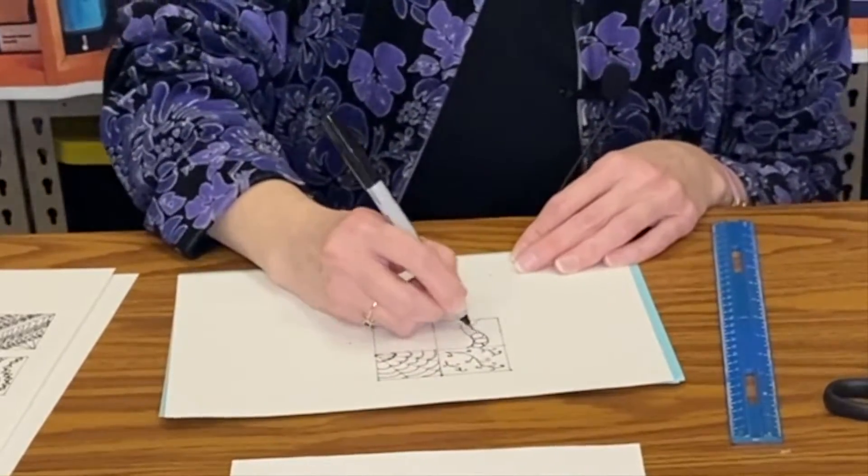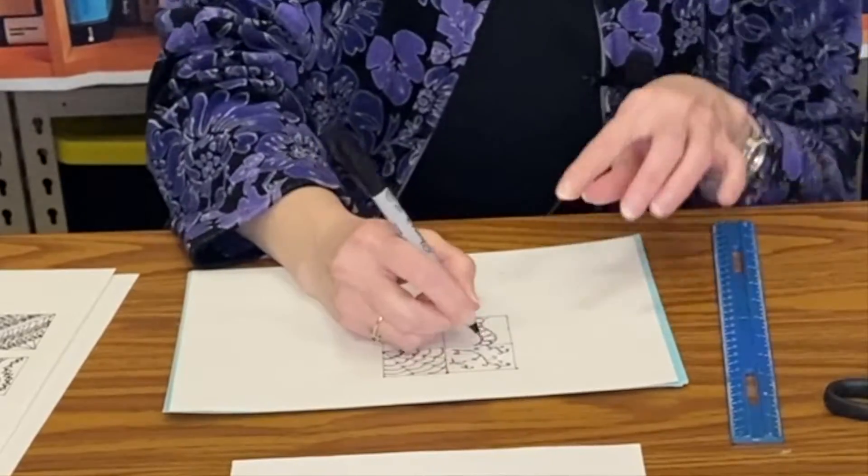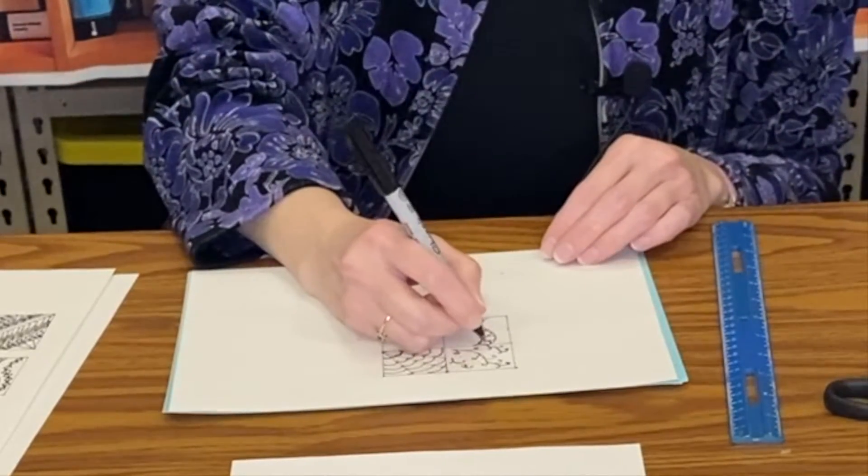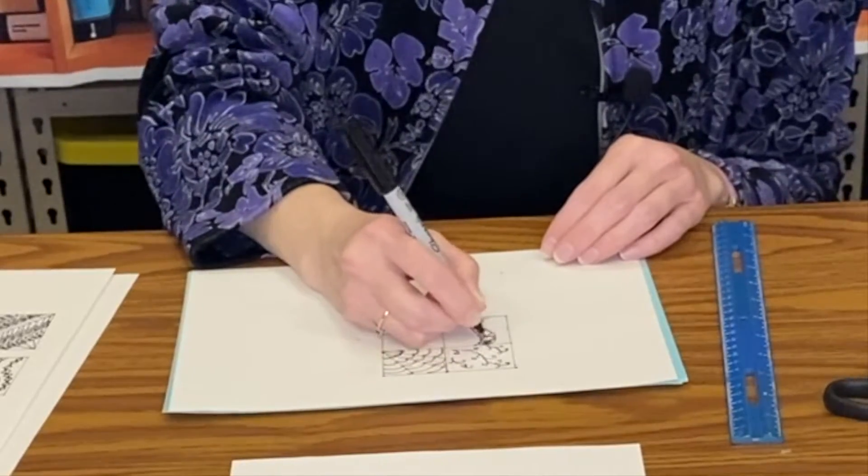And then to create the little rosette shape, we'll just start at the edge of the circle right here directly across from you, and then you just make sort of a spiral shape.